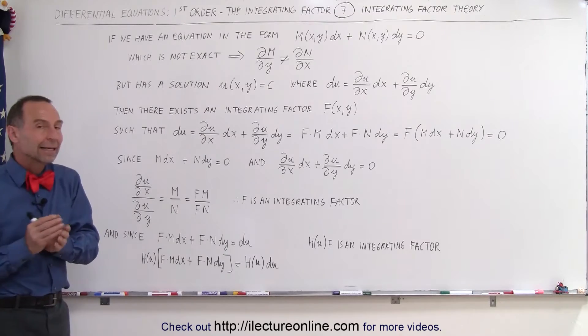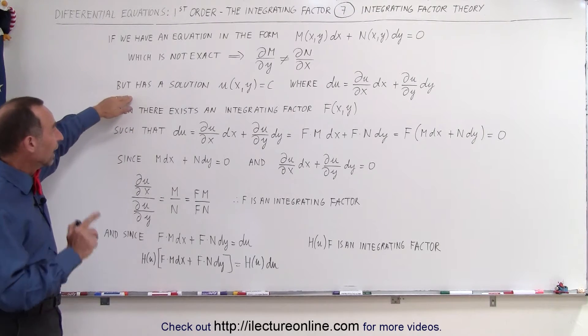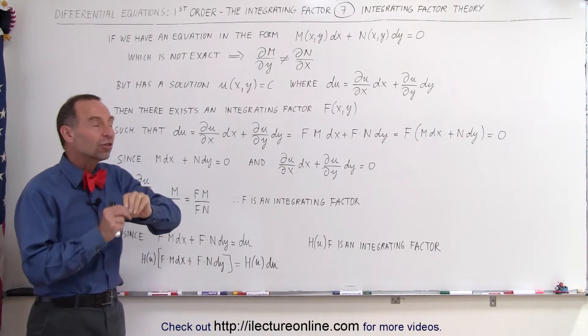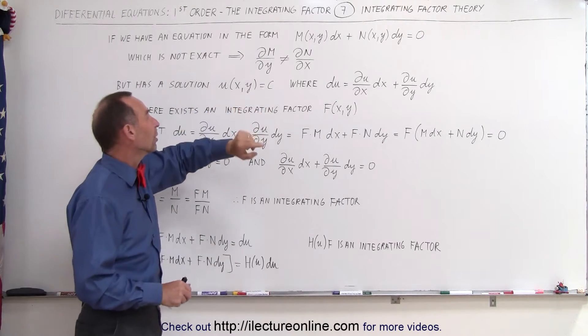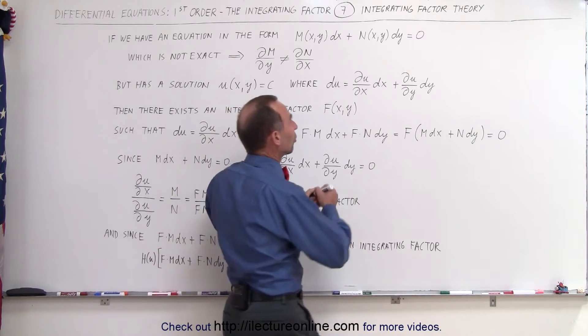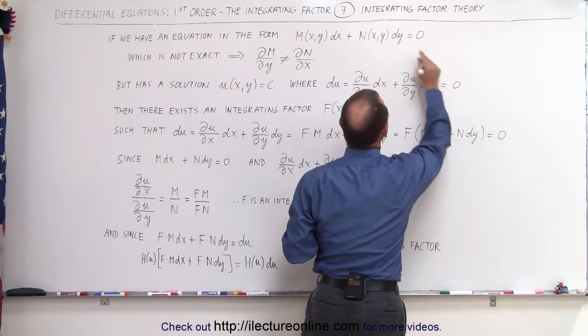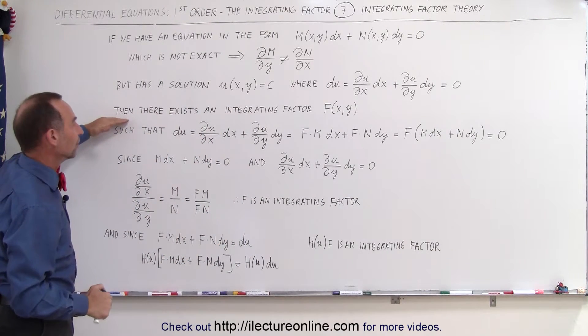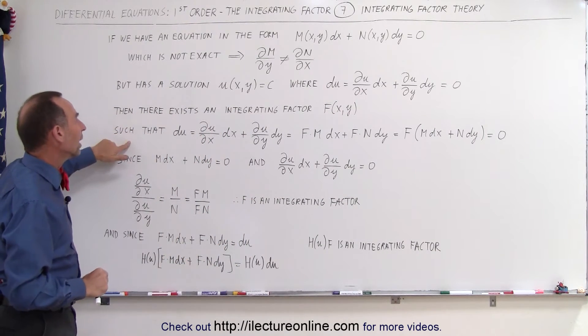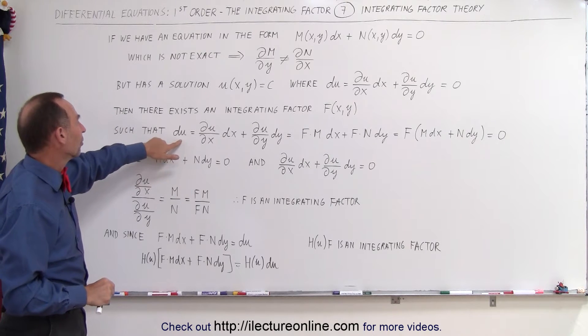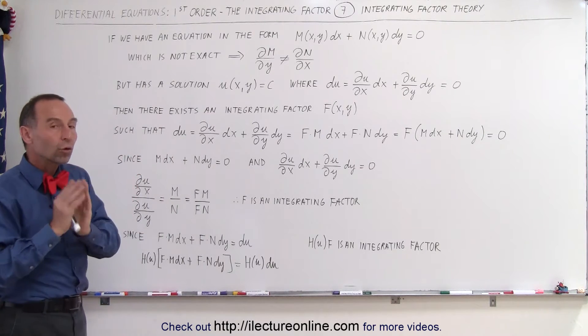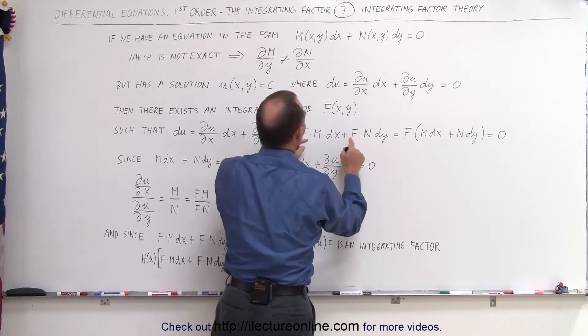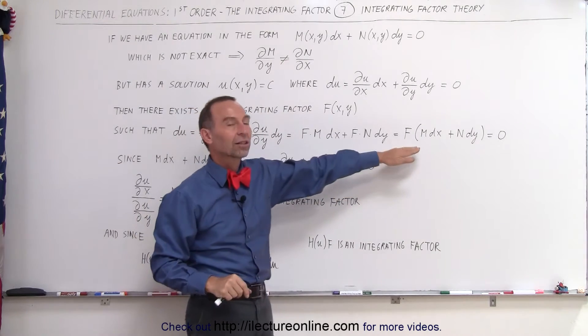So then if it has a solution, which we can call some function u of x and y, and if that function is equal to a constant so that we can define du as being equal to this, which of course is therefore equal to 0, then there must be an integrating factor. It must exist in such a way that if we take this function du, it must then also be equal to this original function multiplied times the integrating factor.